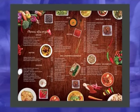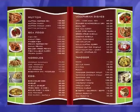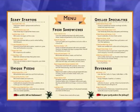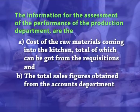The most important aspect is the revision of standard recipes of the items offered on the menu, which should be on a periodic basis. The information for the assessment of the performance of the production department includes the cost of raw materials coming into the kitchen, the total of which can be obtained from requisitions, and the total sales figures obtained from the accounts department. A food cost report is prepared and compared with the budgeted food cost.